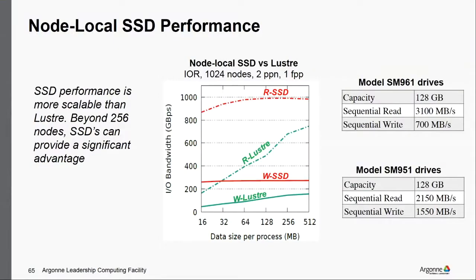Q&A: You're definitely going to get an improvement from SSDs because there is a clear advantage. Even comparing to Lustre with no network contention at all versus with network contention, you get that advantage. In this comparison, you're actually comparing to Lustre with a huge advantage — this is read caching. You can't possibly get near 800 gigabytes per second on Lustre unless you're taking caching into account. Both cases have a lot going for them.